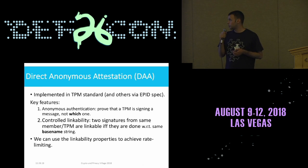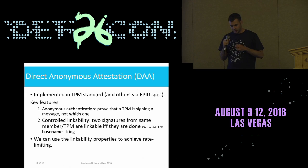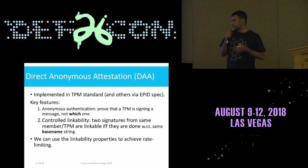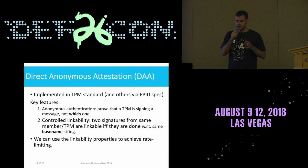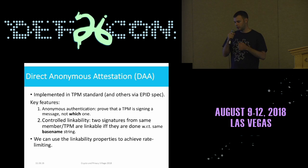So what is direct anonymous attestation? Direct anonymous attestation is a cryptographic primitive which is implemented in processors that follow the trusted platform module standard, as well as other chips following the Intel enhanced privacy ID specification. Rather than focusing on the hardware, we would like to focus on the cryptographic primitive itself. For our purposes, direct anonymous attestation has two key features. First, it allows for anonymous authentication — you can prove that a trusted platform is signing a message, but not which concrete platform is doing so. In other words, signatures can prove membership of a device in a group, but not which concrete device is signing the message.